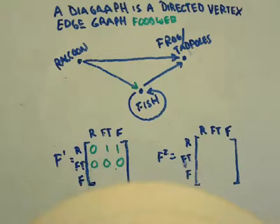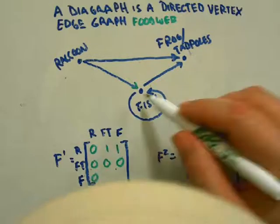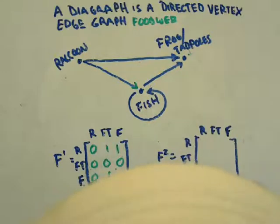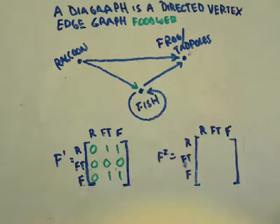How about fish? Do fish eat raccoons? No. Do fish eat frogs and tadpoles? Yes, one. Do fish eat fish? Yes, that's where that loop comes in, so you count that as one. That's F1.